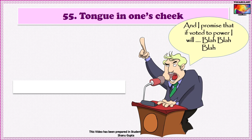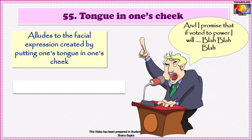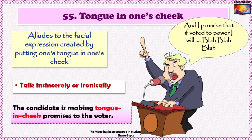Idiom No. 55 is 'Tongue in one's cheek.' This phrase alludes to the facial expression created by putting one's tongue in one's cheek. It means to talk insincerely or ironically. The best example is election time, when most of the politicians simply make tongue-in-cheek promises to the voters.